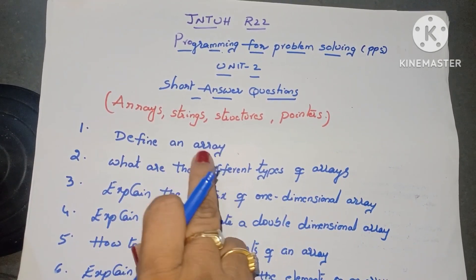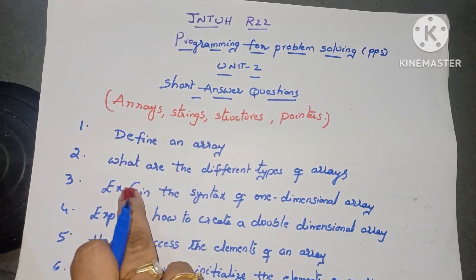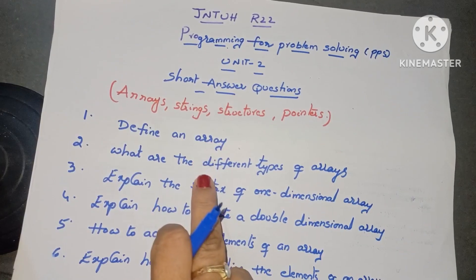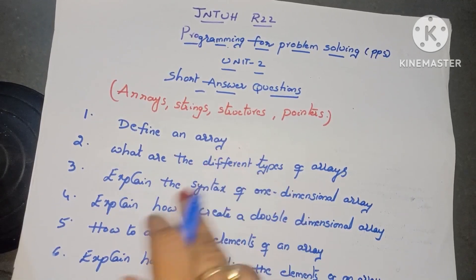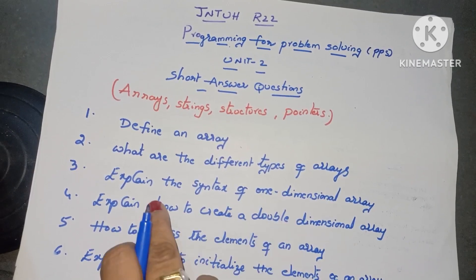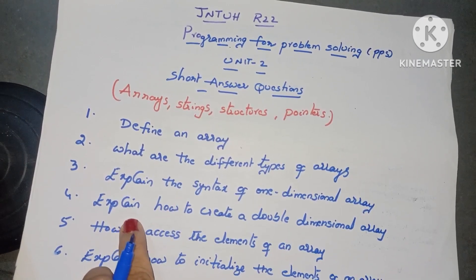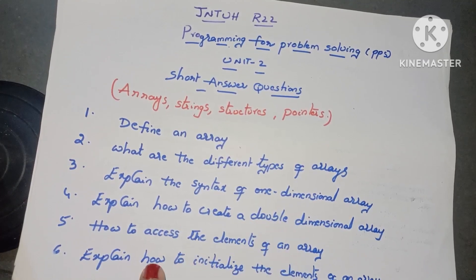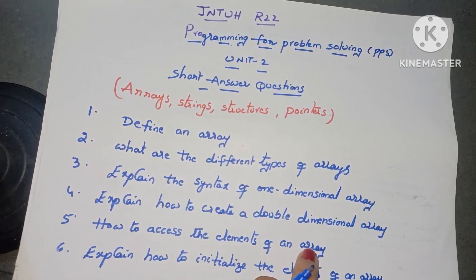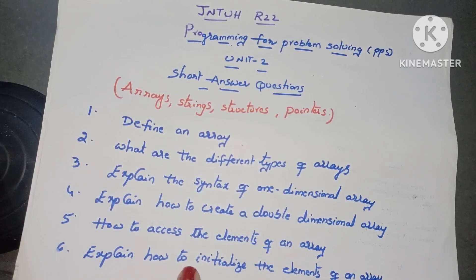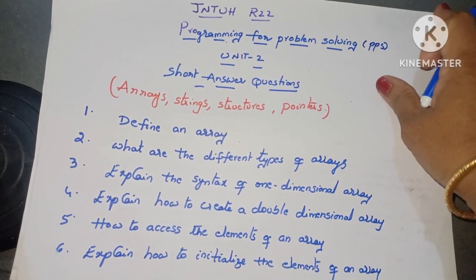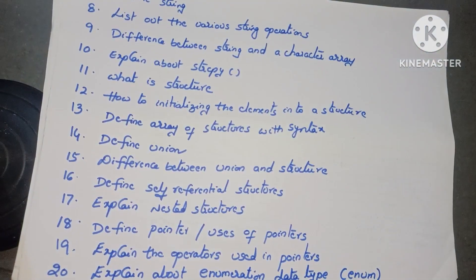The first question is: define an array. Second question is: what are the different types of arrays — just give the list of the different types. Third question is: explain the syntax of a one-dimensional array. Next one is: explain how to create a double-dimensional array. Next: how to access the elements of an array, and explain how to initialize the elements of an array. These are all the questions from arrays.